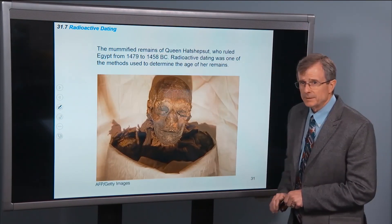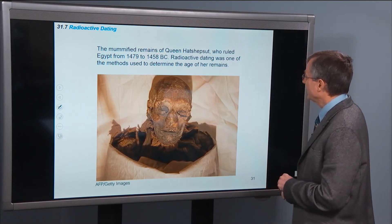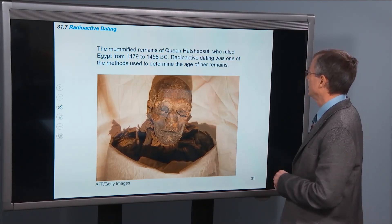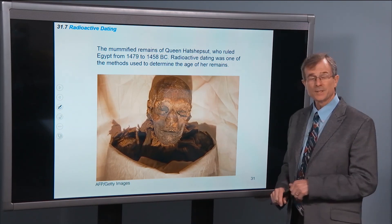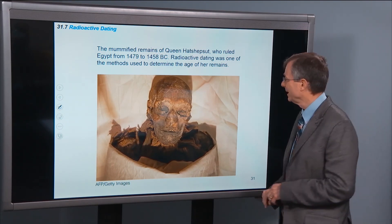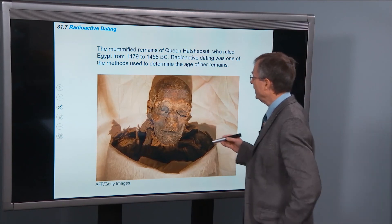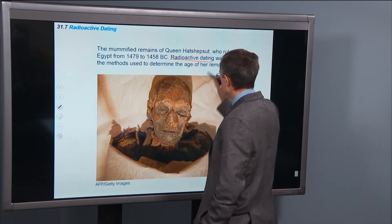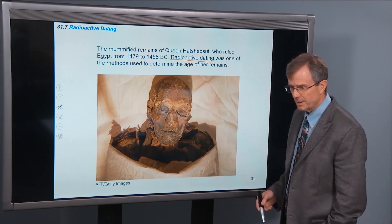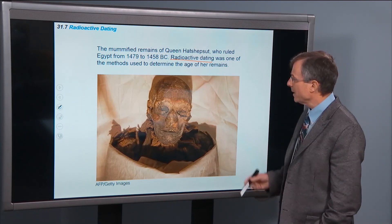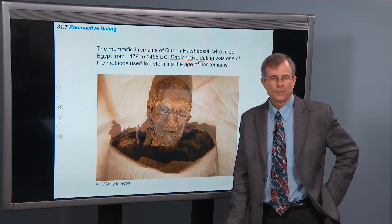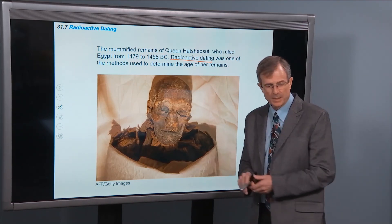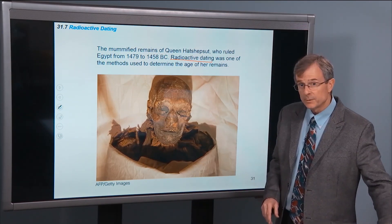So this is Queen Hatshepsut, who ruled in Egypt from 1479 to 1458 BC. And radioactive decay dating, radiocarbon dating using carbon-14, was one of the methods that was used to determine the age of her remains, and which has been confirmed by other methods.